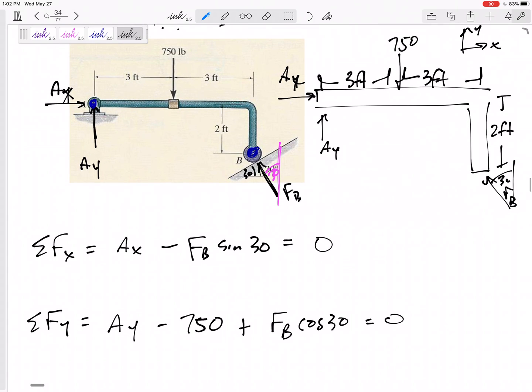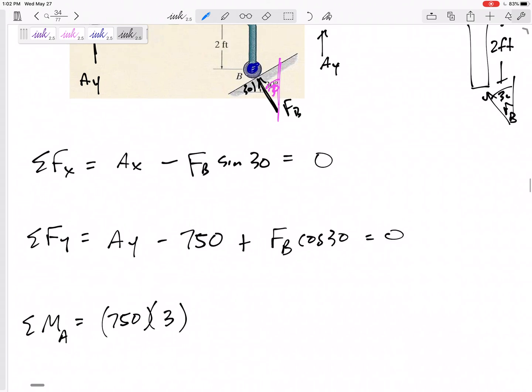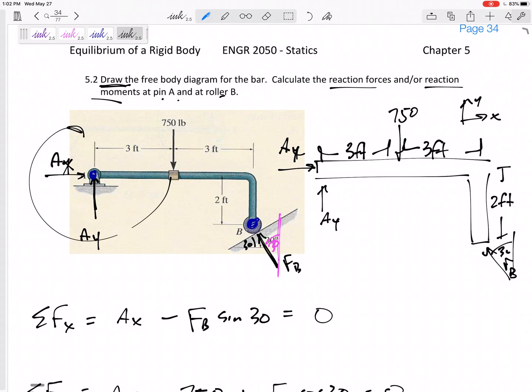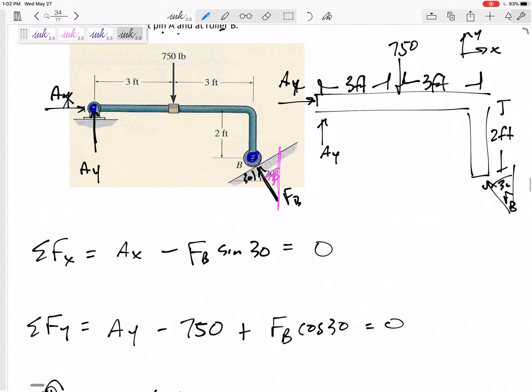So let me sum my moments about A. Ax goes straight through it, Ay goes straight through. Let's think about 750 - what type of moment does it create about A? 750 is three feet away creating a negative moment. I want to say positive is counterclockwise, so that would be a negative moment.